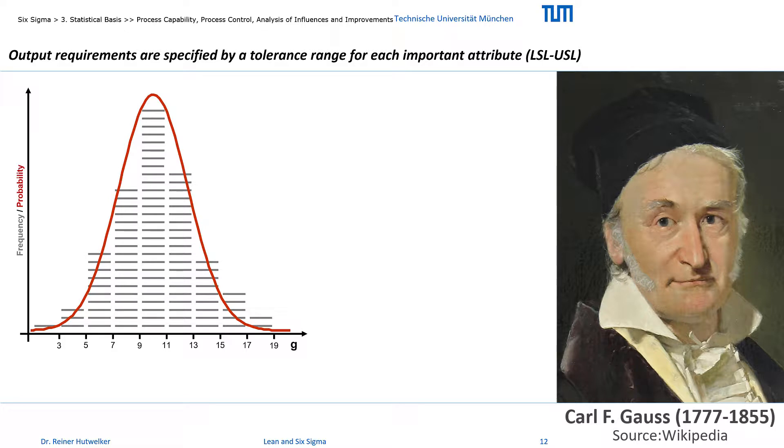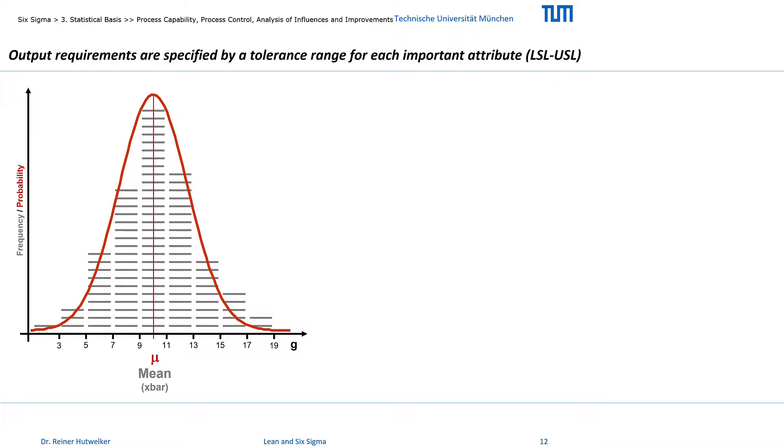And this sample fits well with a bell-shaped model of the normal distribution of Carl Friedrich Gauss. You can see that the average weight of cookies in this sample is 10 grams and that their weight is scattered around the mean with a standard deviation of 3 grams.